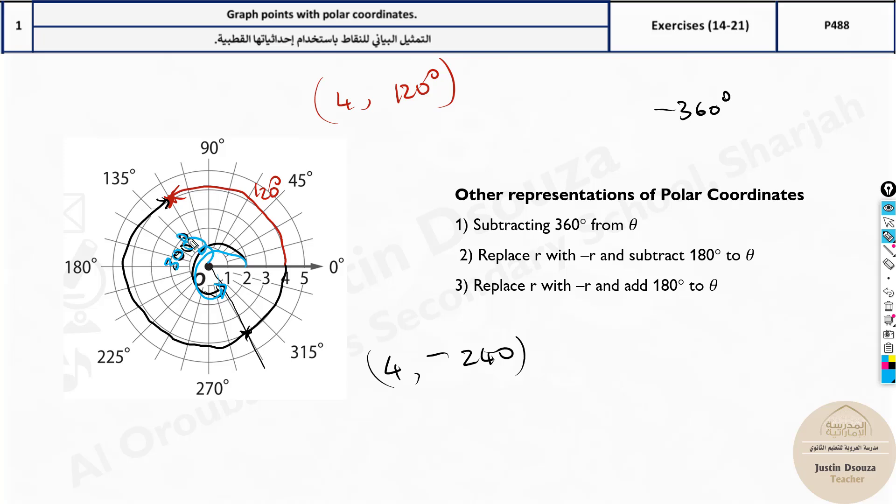So minus 4, 300 degrees is a possibility as well. But how do you get this? It's simple. For this 120, you add 180 degrees. What happens? It's 300 degrees. But whenever you add or subtract 180, you need to change the radius sign.